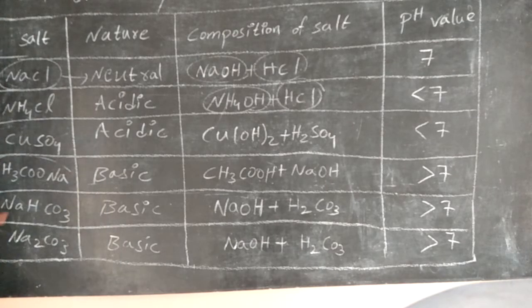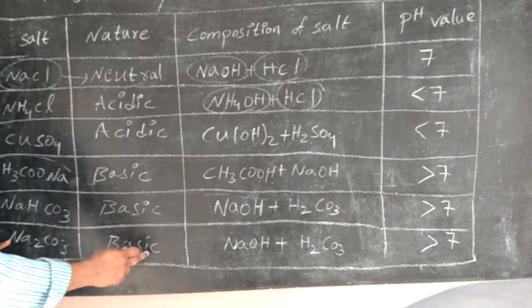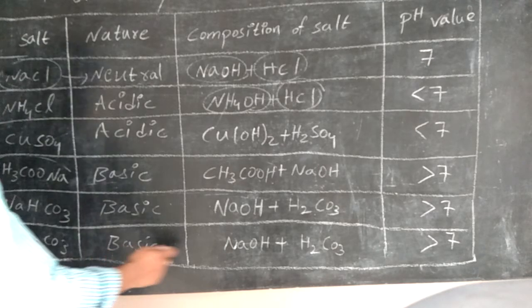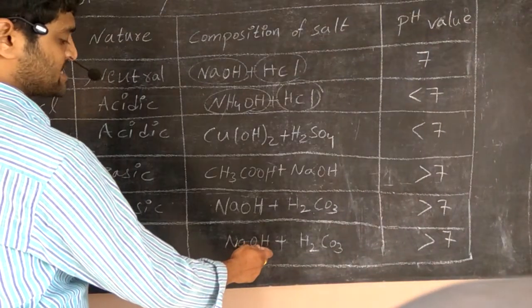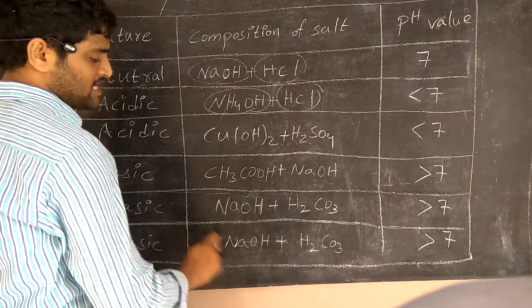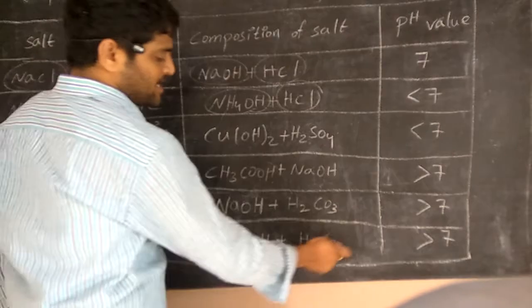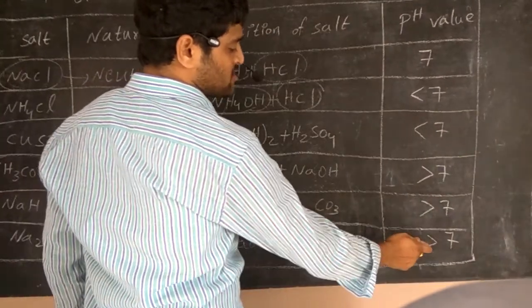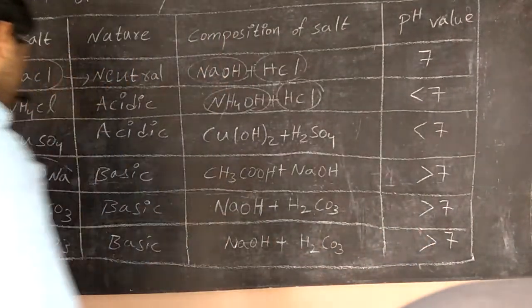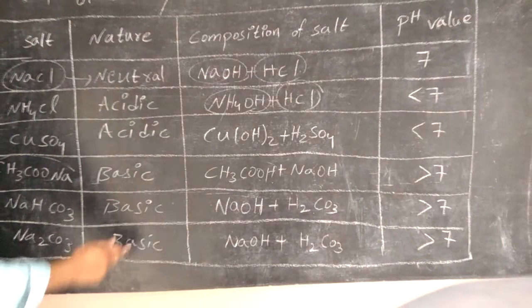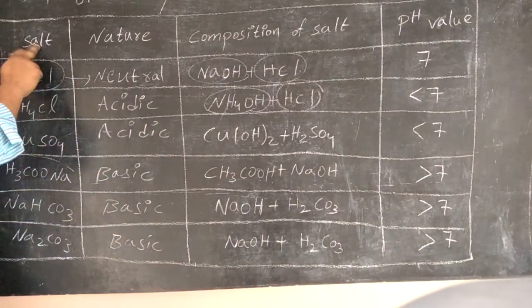Coming to sodium carbonate: sodium carbonate is a basic salt. Why? Because it is formed by a reaction with a strong base and a weak acid, and the resultant pH value is greater than 7. That's why sodium carbonate is called a basic salt.